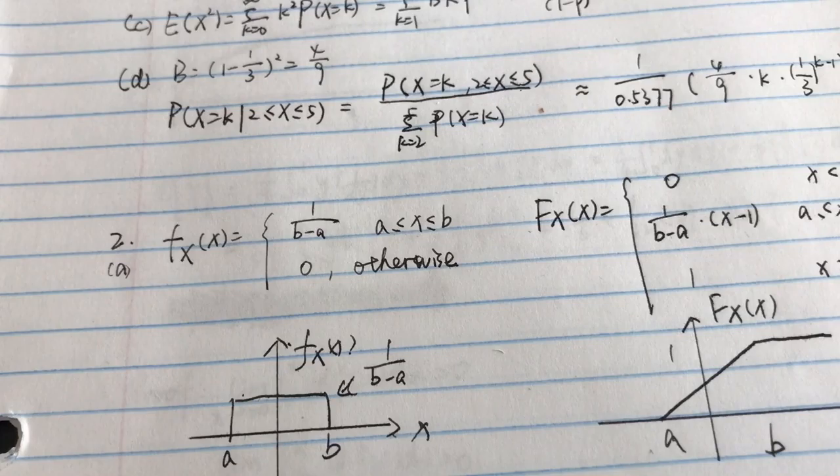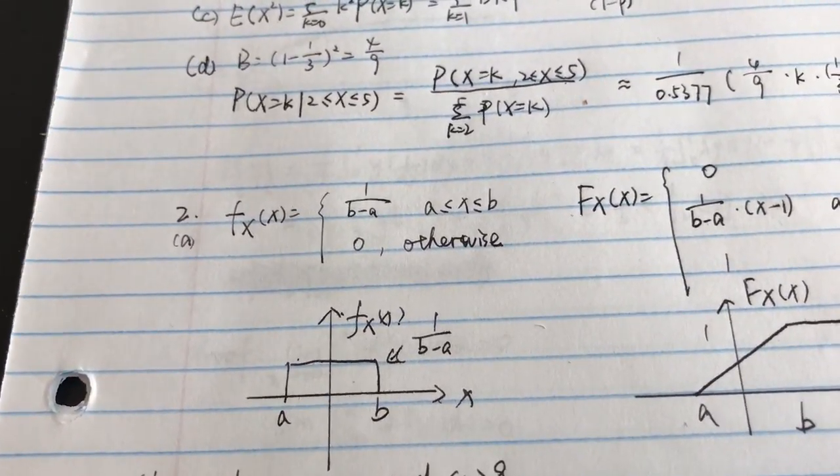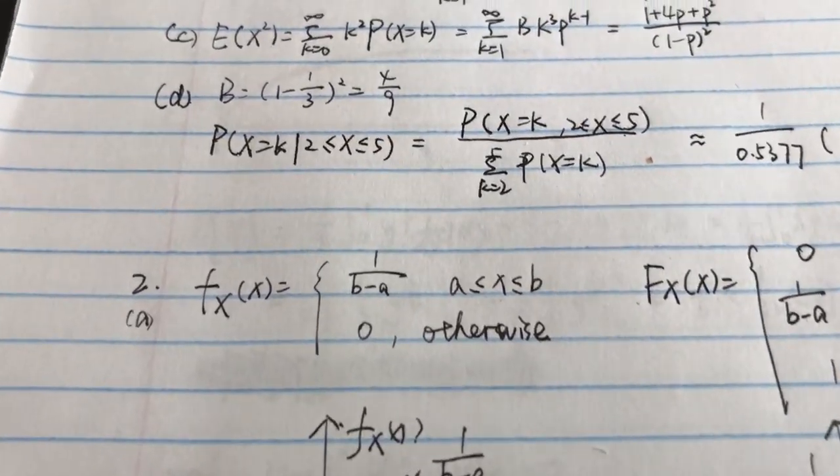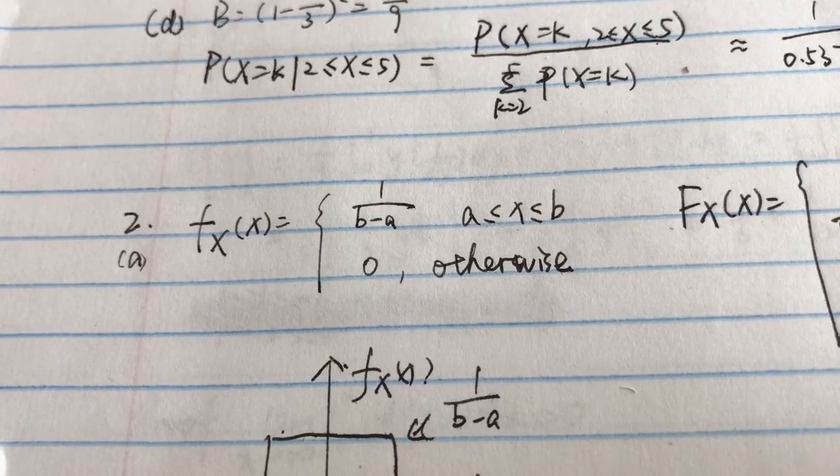It is 1 over b minus a when x is more than a and less than b. This function is 1 divided by b minus a, and 0 otherwise.